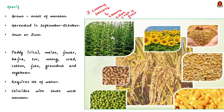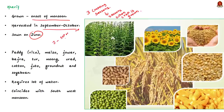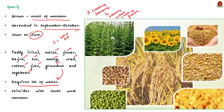The Kharif crops are grown with the onset of the monsoon in different parts of the country, and are harvested in September to October. The crop is sown in June, so the season lies between June to September or October. Important crops grown during this season are paddy (rice), maize, jowar, bajra, tur, moong, urad, cotton, jute, groundnut and soybean. These crops require a lot of water, which is why their cultivation coincides with the southwest monsoon season.